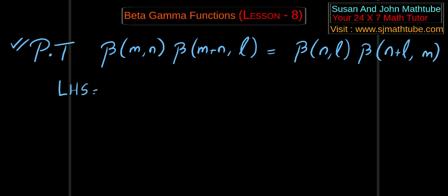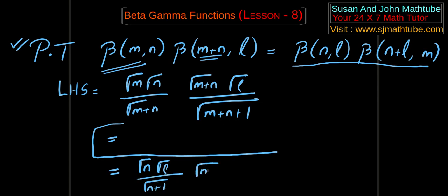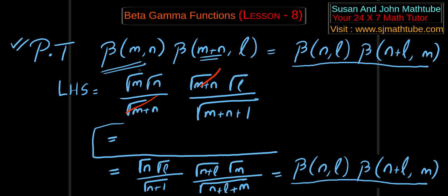So let's start from the LHS. What is beta MN? Gamma M, gamma N by gamma (M plus N). And this is gamma (M plus N), gamma L by gamma (M plus N plus L). Isn't it? Gamma (M plus N). And this is equal to, I don't know what's that. But I am going to do a small trick here. It's a prove that question. I am 100% confident we will get this. So I will leave one step here. And I am going to write whatever I want. That is gamma N, gamma L by gamma (N plus L). Gamma (N plus L), gamma M by gamma (N plus L plus M).